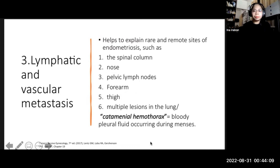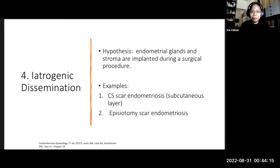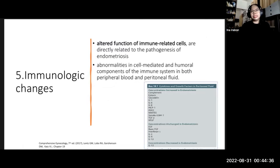The fourth theory is iatrogenic dissemination, when endometrial glands and stroma are implanted during a surgical procedure, such as in cases of cesarean scar endometriosis where endometriotic lesions appear in the subcutaneous layer, and episiotomy site endometriosis. The theory most commonly cited by experts is immunologic changes, which states that altered function of immune-related cells is directly related to the pathogenesis of endometriosis, and that abnormalities exist in cell-mediated and humoral components of the immune system in both peripheral blood and peritoneal fluid.